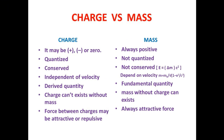Now, the differences between charge and mass: Charge can be positive, negative, or zero; mass is always positive. Charge is quantized; mass is not quantized, because mass can be converted to energy (E = mc²). Charge is independent of velocity, while mass depends on velocity in relativistic cases. Charge is a derived quantity; mass is a fundamental quantity. Charge cannot exist without mass, but mass can exist without charge. Force between two charges may be attractive or repulsive, whereas gravitational force between masses is always attractive.